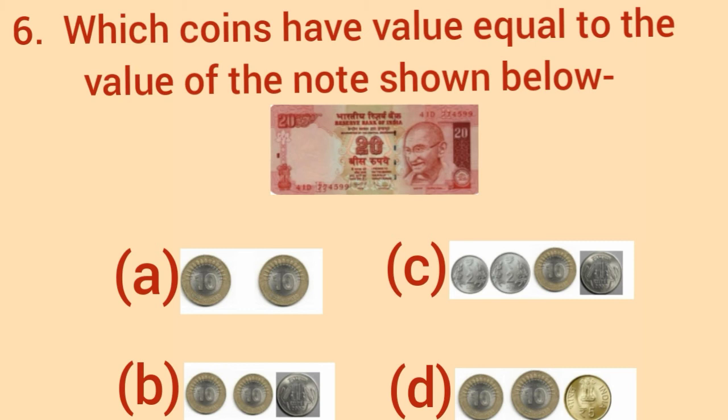Option A has one 10 rupees coin, one more 10 rupees coin. So, these are 20 rupees. And, in option B, there are 10 rupees coin, one more 10 rupees coin, 1 rupee coin. So, these are 21 rupees.